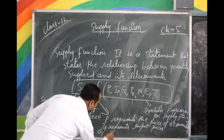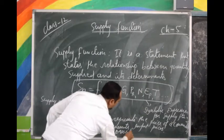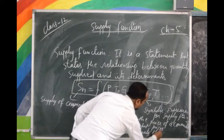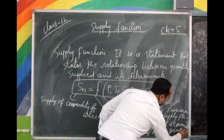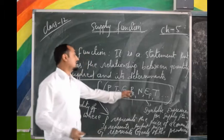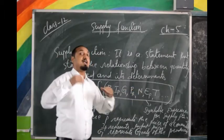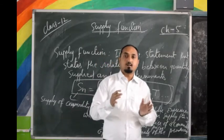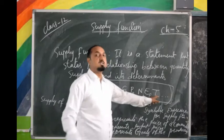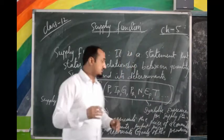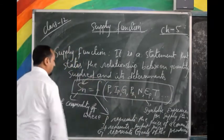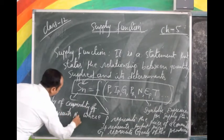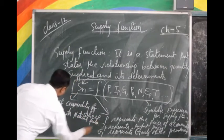G represents goals of the producers. PR represents price of related goods. N represents natural factor. EP represents expectations regarding future prices. And T represents transportation cost or mode of transportation. So all these are the factors that affect the supply of the commodity.